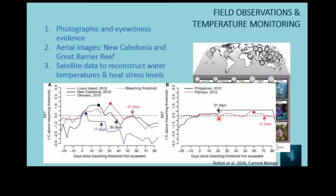For all sites except the Philippines, corals survived these bleaching events with really high survival — the lowest was 85% of bleached corals. Only in the Philippines did 100% of bleached corals not survive. They thought that colorful bleaching could have a really positive impact on coral survival during bleaching events.